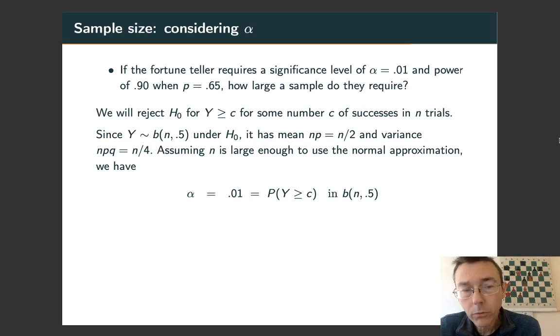We're going to assume that n is large enough to use a normal approximation. If at the end of this calculation we come back with a small n, we're going to want to revisit that assumption. But let's start by working that way. We know that α = 0.01. That's the probability that Y comes back greater than or equal to c in this binomial distribution.